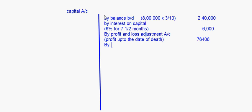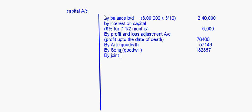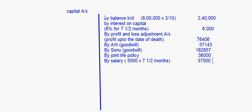By Aarti — this is the goodwill — fifty seven thousand one hundred and forty three. By Sonu — again goodwill — one lakh eighty two thousand eight hundred and fifty seven. Then there is the joint life policy: the joint life policy amount was one lakh twenty thousand, and in her profit sharing ratio 3/10, that comes to thirty six thousand. Salary is given at the rate of five thousand per month, so five thousand into seven and a half months comes to thirty seven thousand five hundred.